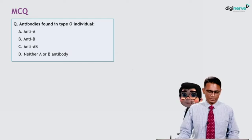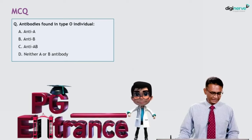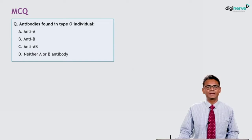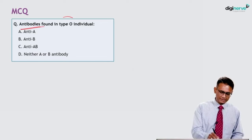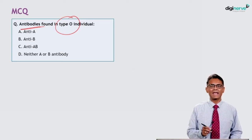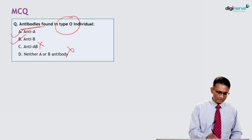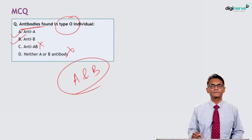MCQ — antibodies found in a type O individual: options are A) anti-A, B) anti-B, C) anti-AB, D) neither A nor B antibody. Antibodies in a type O individual — they will have antibodies against both A and B. So the correct options are A and B. This kind of question is sometimes asked in PGI.